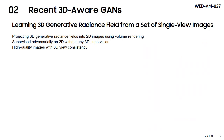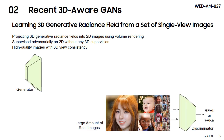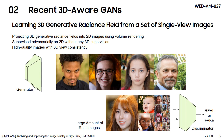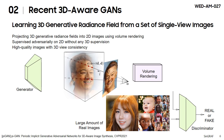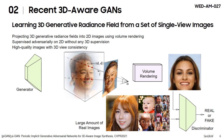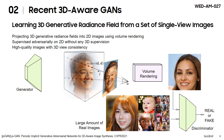Our method builds on recent progress in 3D-aware GANs. On the well-known GAN framework, instead of directly generating 2D images, 3D-aware GANs train generative radiance fields from a set of single-view images. They render the sampled scenes from various viewpoints via volume rendering and supervise adversarially, enabling view-consistent novel-view synthesis.